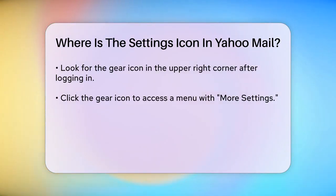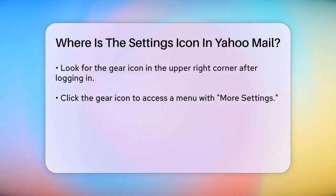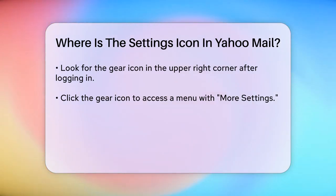For those using the latest version of the Yahoo Mail app, you might need to tap on your profile icon in the top left of the screen. From there, a drop-down menu will appear, and you should see the settings option listed.